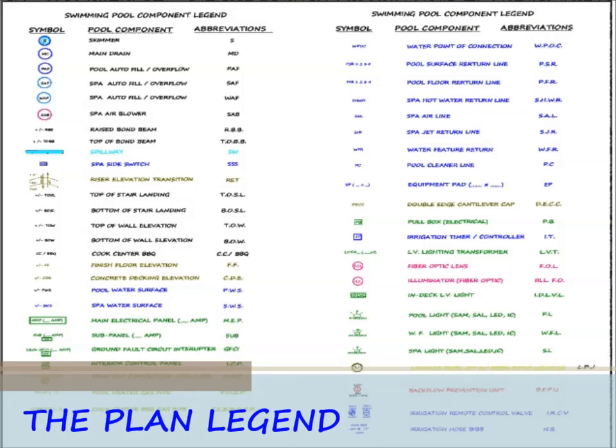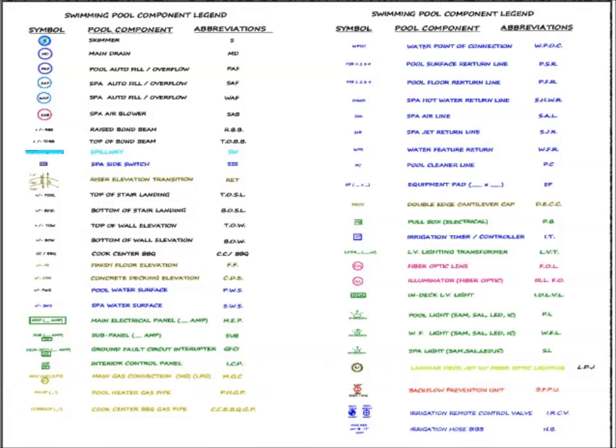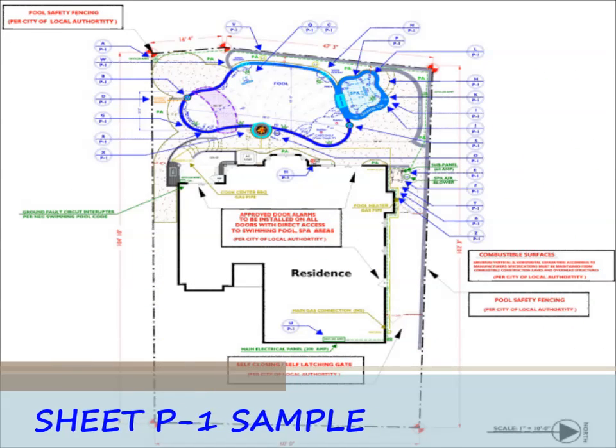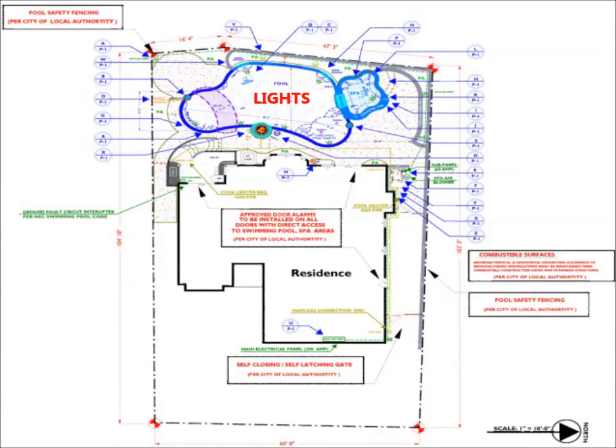The plan's legend will connect these design elements to their designated locations which will correspond to where each component is to provide its function such as lights, skimmers, main drains, and so on.